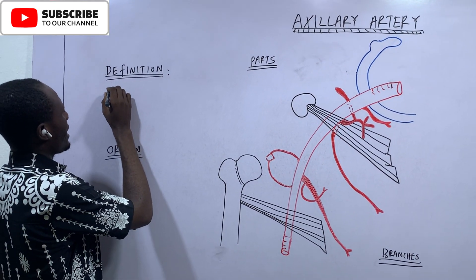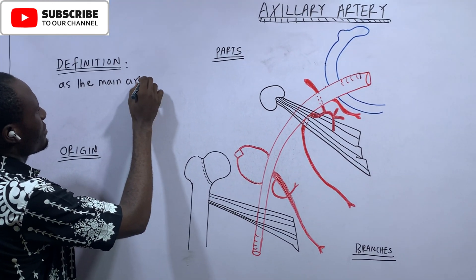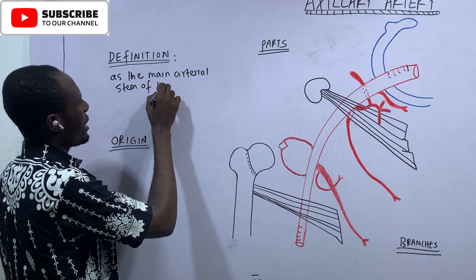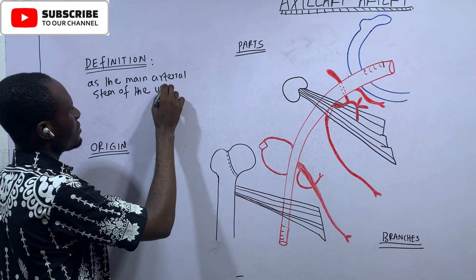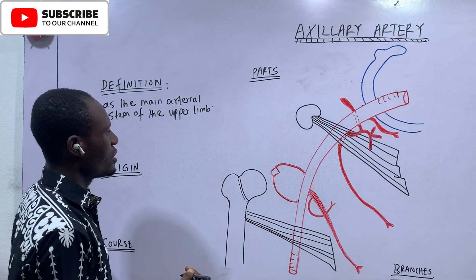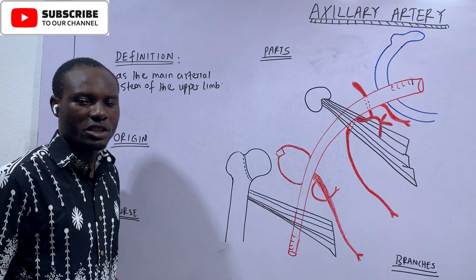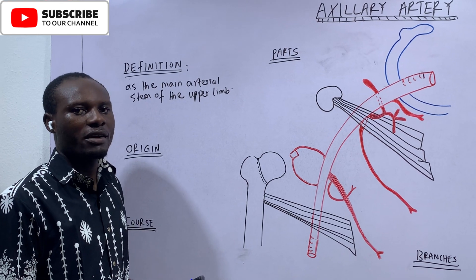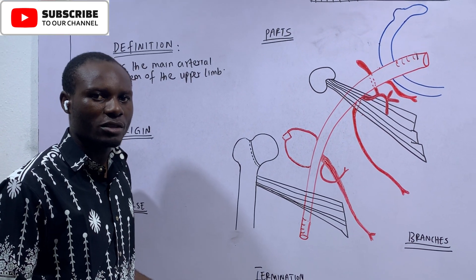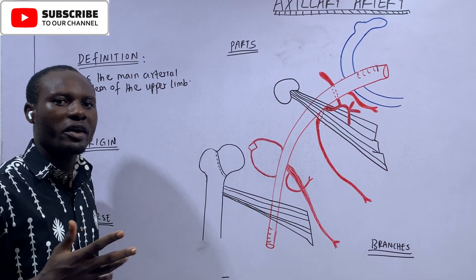The axillary artery is defined as the main arterial stem of the upper limb, or the main arterial trunk of the upper limb. It is from the axillary artery that every other blood supply is derived in the upper extremity. The branches of the axillary artery will supply some parts of the upper limb, and the terminal branches will also supply some parts of the upper limb.